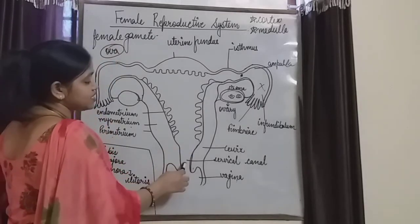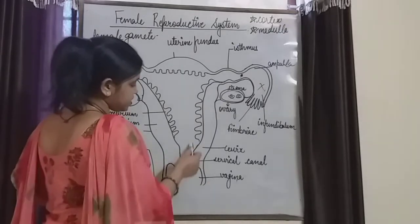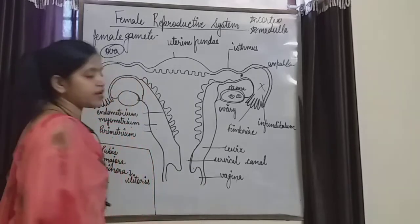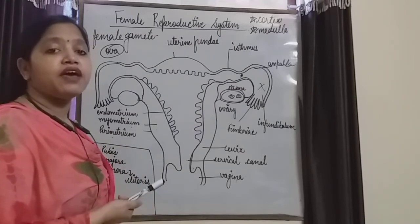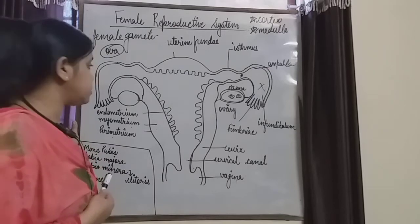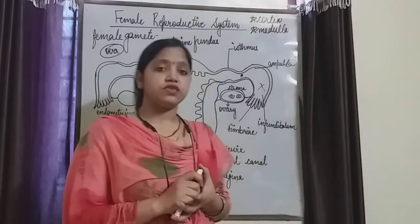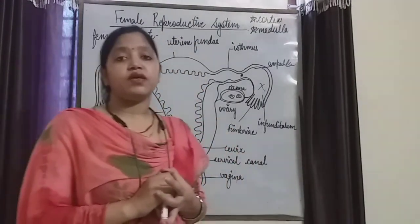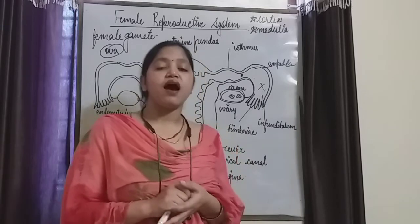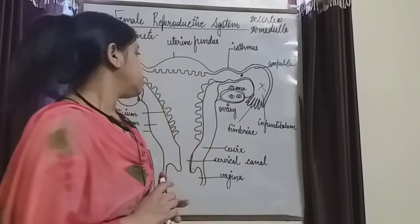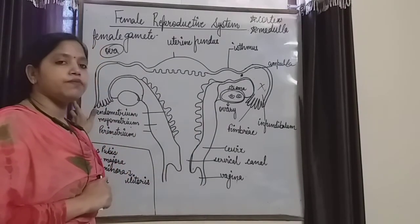That canal is said to be the cervical canal, through which sperms can enter during the time of copulation. The opening of the cervical canal is said to be the vagina. The vagina is the birth canal, or the canal through which the menstruation flow takes place. The female reproductive system also contains paired mammary glands, which is a characteristic feature of the human female. We will study the mammary glands later on. So this is all about the female reproductive system.